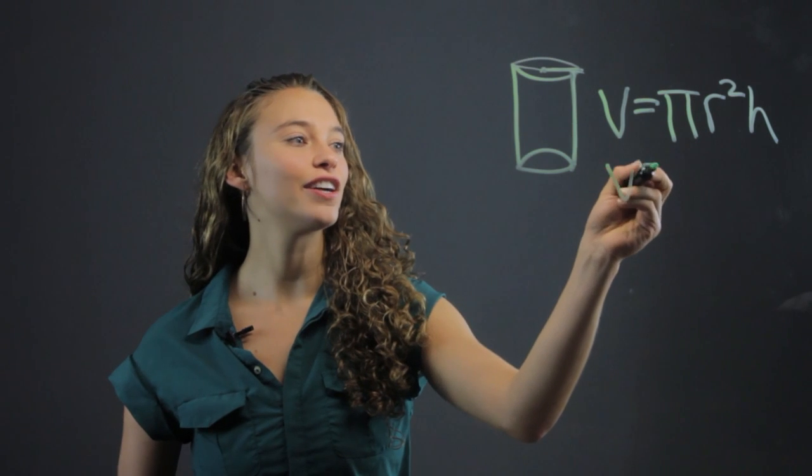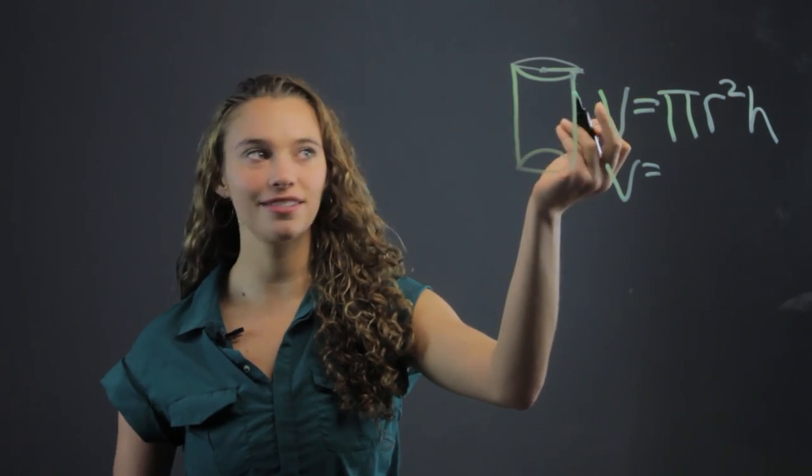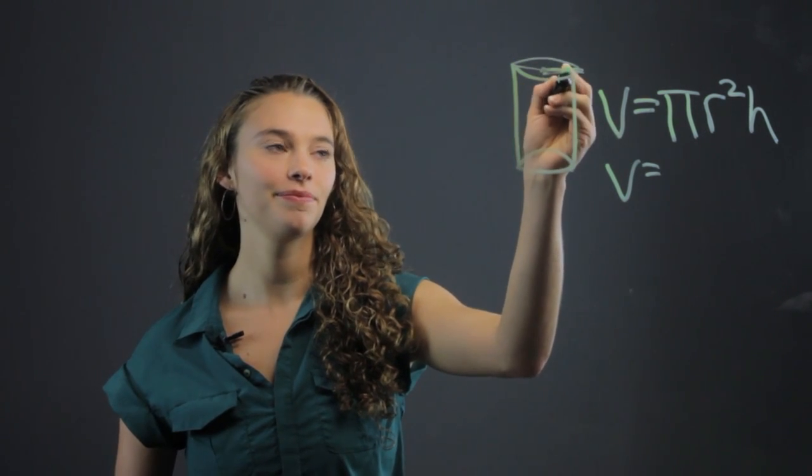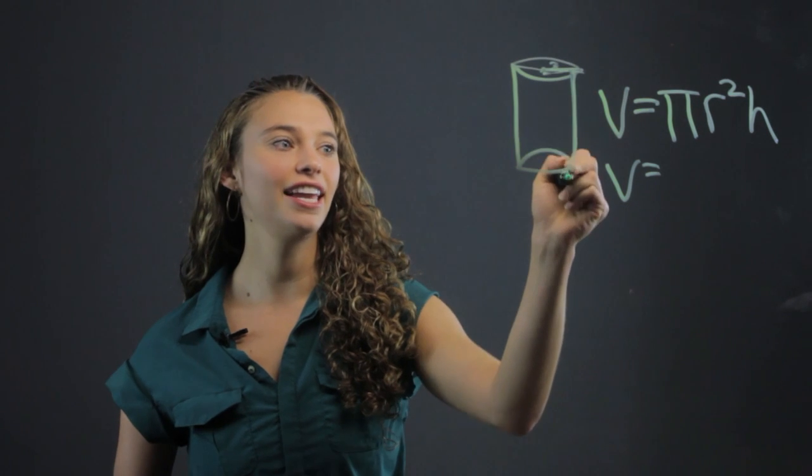So let's say you have a circle with a diameter of six, so it has a radius of three, and it has a height of ten.